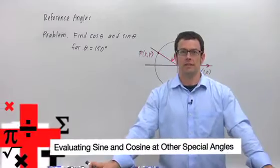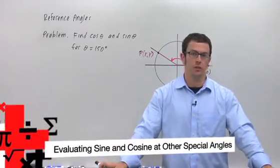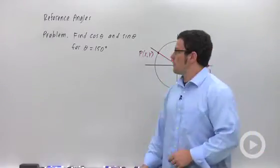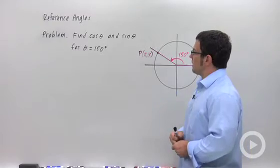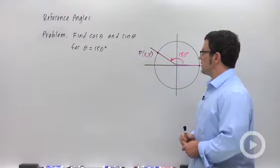I want to talk about how to find the sine and cosine of angles that aren't acute. So I'm going to start with an example, finding the cosine and sine when theta equals 150 degrees.